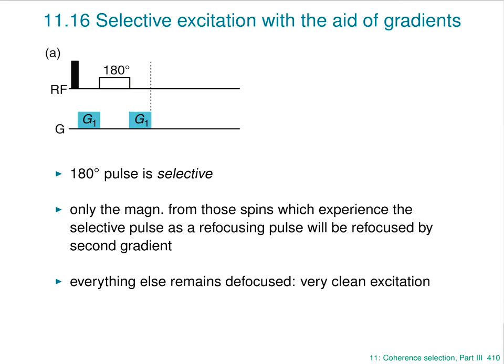This is quite important, because with normal selective excitation you excite the signal you're interested in, but all the magnetization from other peaks remains on the z-axis. The moment you do anything else, all those strong signals appear the first time you apply a 90 degree pulse. With this gradient method, all the magnetization from other peaks has been dephased and is not going to come back to haunt you. So this gradient echo is a very clean way of making selective excitation.